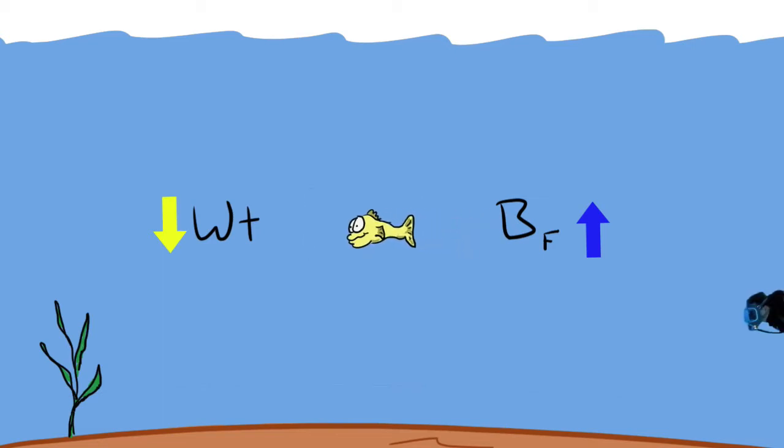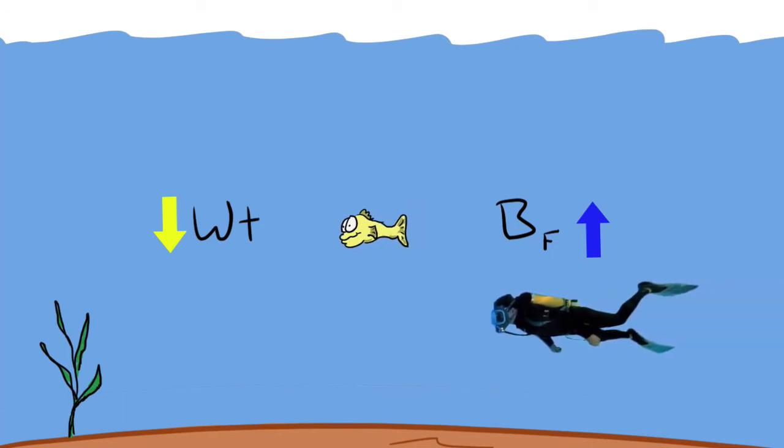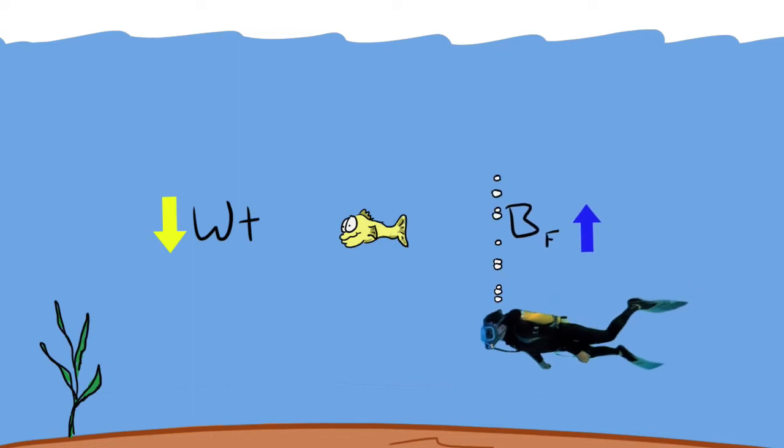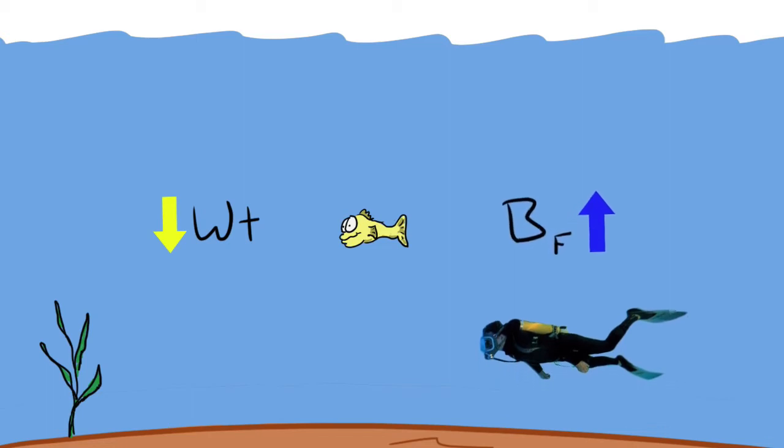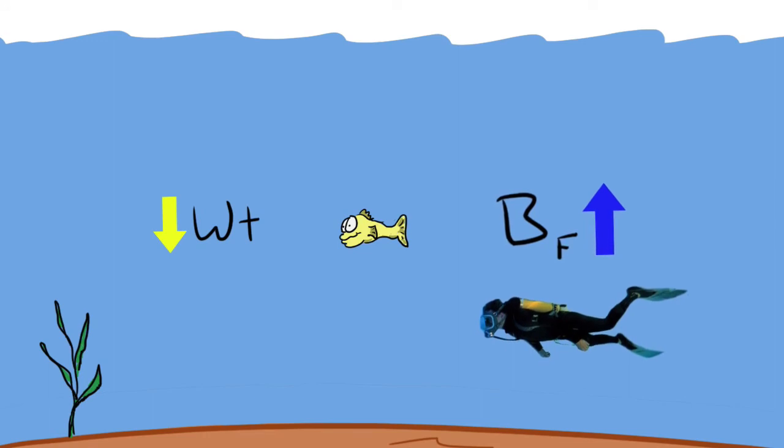Scuba divers know that exhaling their breath causes them to sink. Why? Because doing so decreases the volume of the chest cavity. To rise, the scuba diver takes in a deep breath to expand their volume and thus increase the buoyant force.